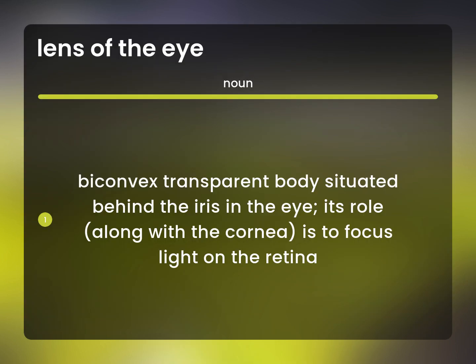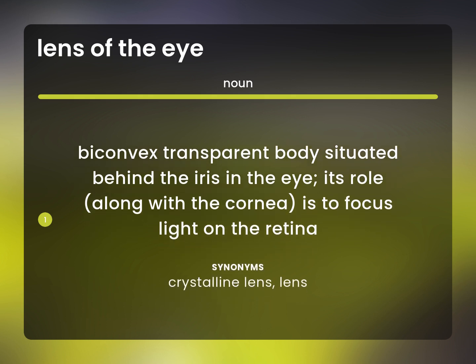Biconvex transparent body situated behind the iris in the eye. Its role, along with the cornea, is to focus light on the retina. Crystalline Lens. Lens.